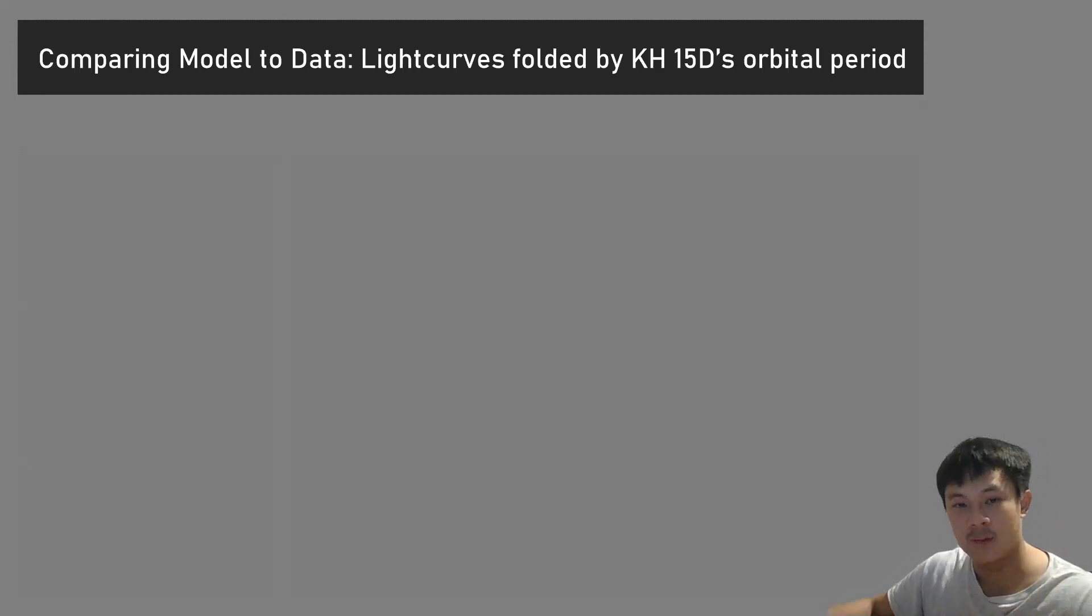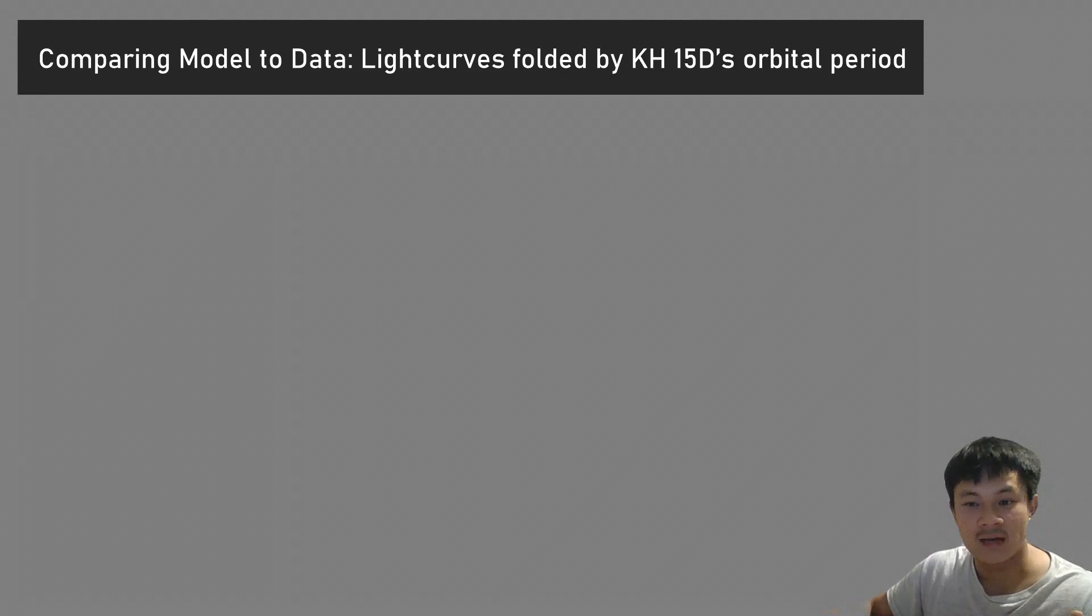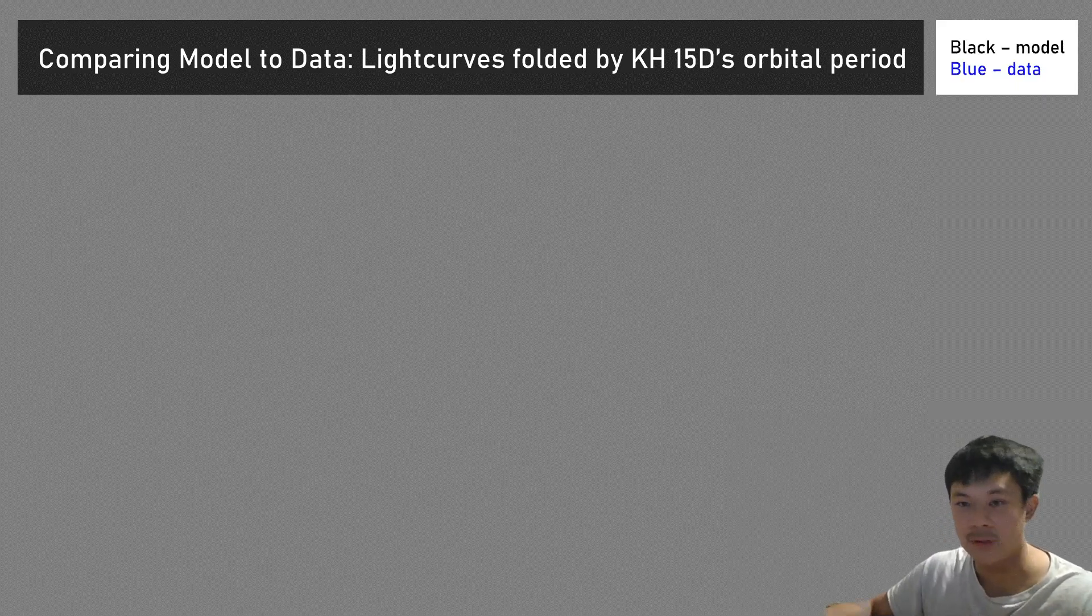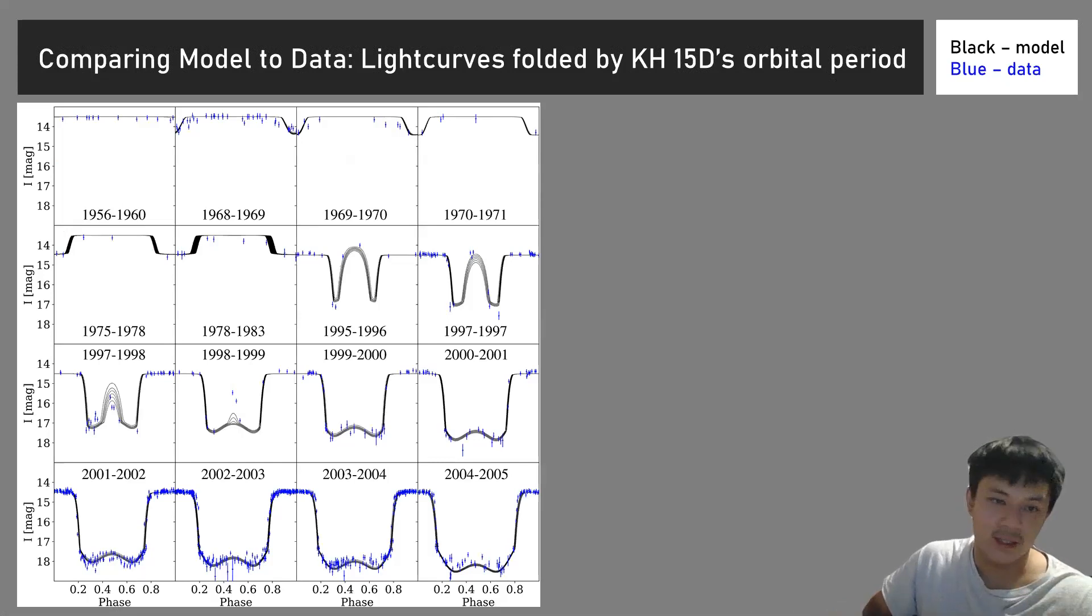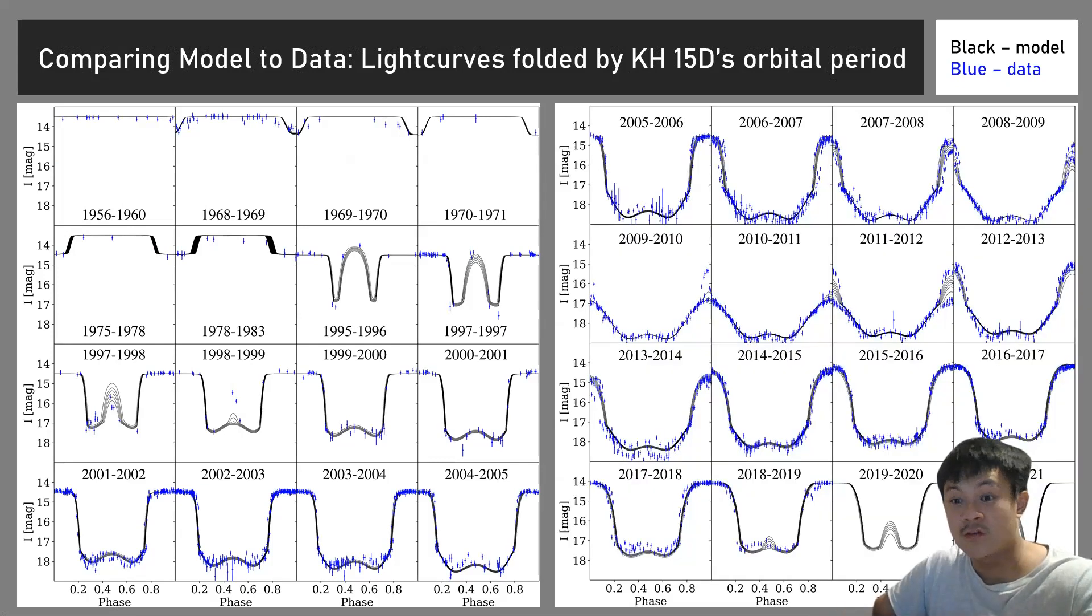Now the fun part: we're looking at what the data looks like compared to the model. In black is the model, blue is the data. What you're looking at here are light curves folded every 50 days for about a year. This light curve dynamically changes over time. What's new in our work is that we fit so much more data, and it seems we actually fit the data pretty well. This light curve is dynamically evolving; there's a lot of rich behavior going on.